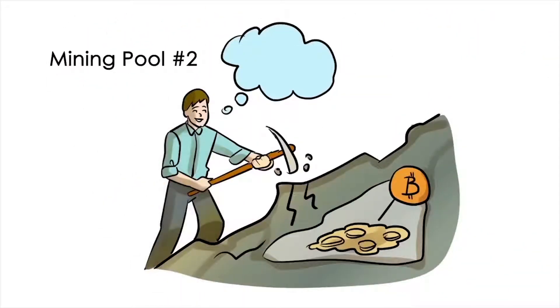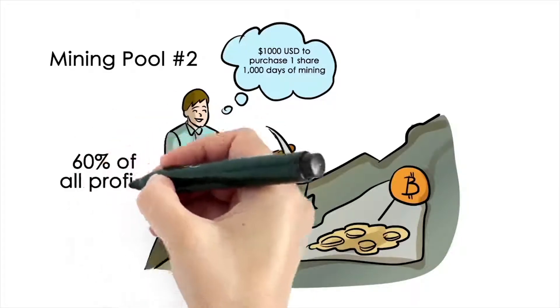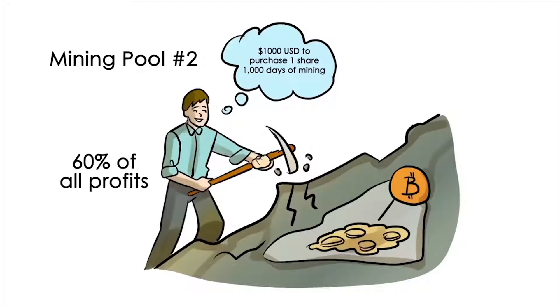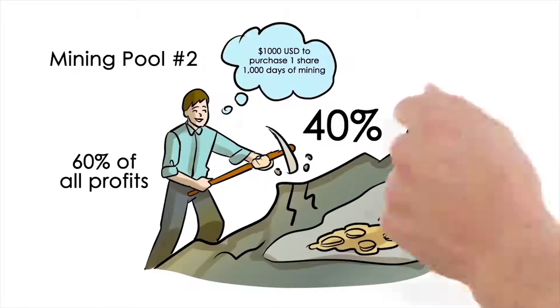Mining pool number two: $1,000 US dollars to purchase one share that pays you for 1,000 days of mining. 60% of all profits will be paid to you on a daily basis, and another 40% will be used to help you purchase additional shares in this mine.